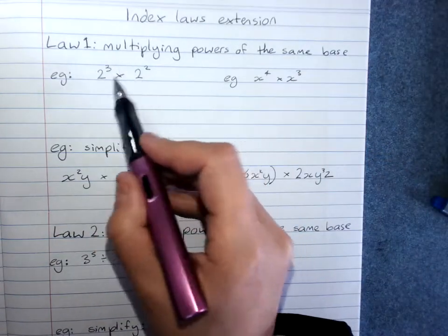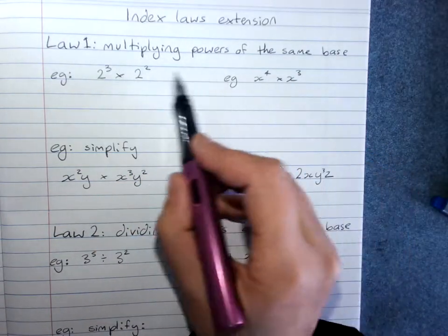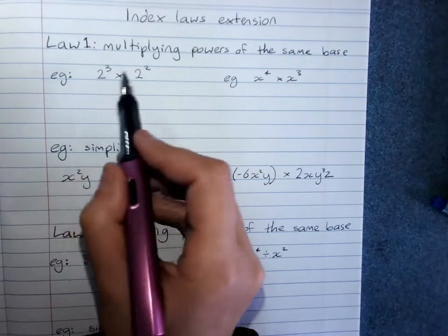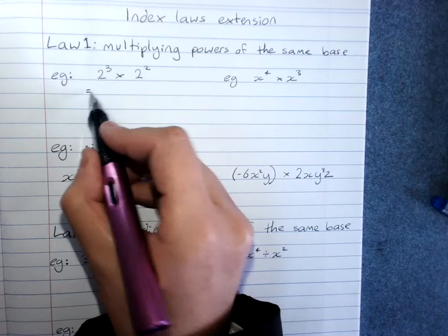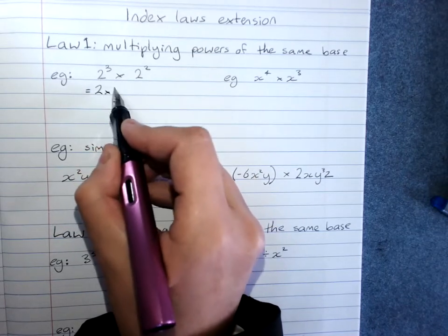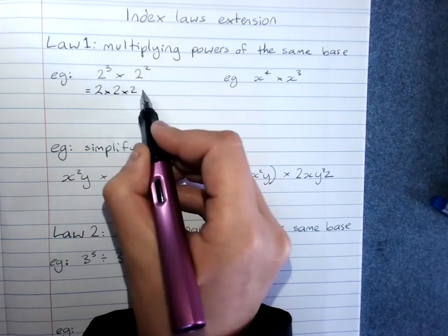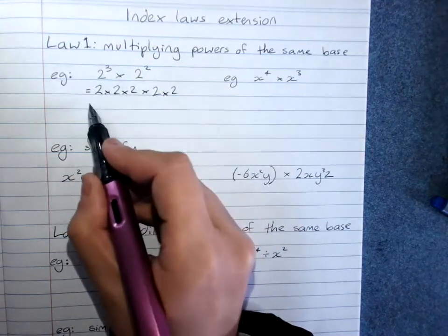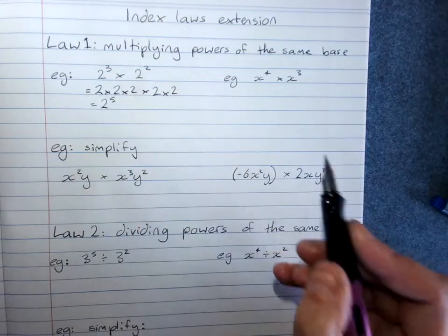So these are multiplications of powers of the same base. They're both 2, they're both x. To look at a shortcut for this we can expand it out. 2 times 2 times 2 is 2 cubed times 2 times 2 for 2 squared. And you can see that that gets us 2 to the power of 5.